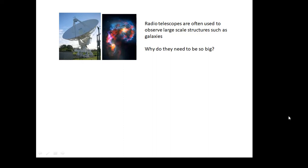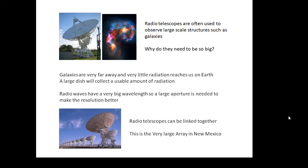Look at this question. Radio telescopes are often used to observe large-scale structures, big things, such as galaxies. Why do radio telescopes need to be so big? And there's two reasons. One reason is that these galaxies are very, very far away, so we're not going to get very much radiation, in other words, radio waves reaching us on Earth. So we need a very, very large dish which will collect as much radiation as possible, as much radio waves as possible. And then the other reason I mentioned earlier is that radio waves have a very big wavelength. So unless you have a very large aperture, then your resolution won't be very good. So having a large aperture, having a very, very big dish, will improve the resolution.